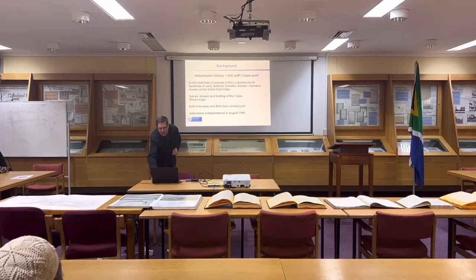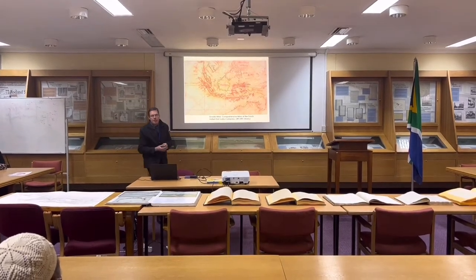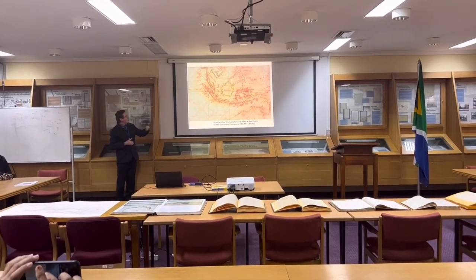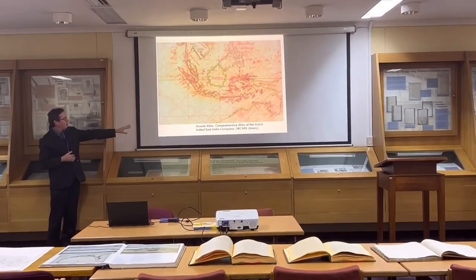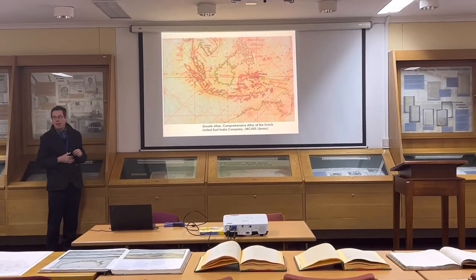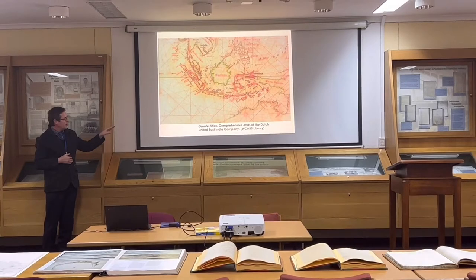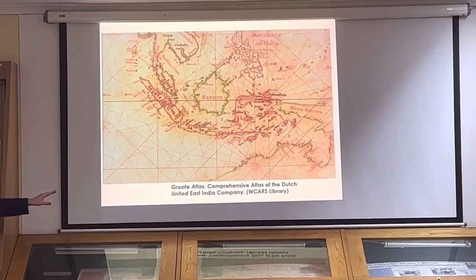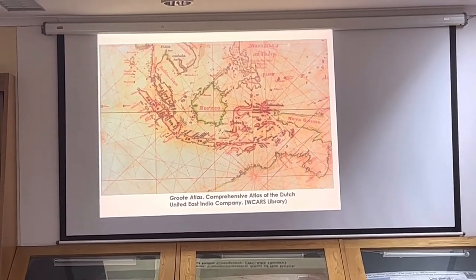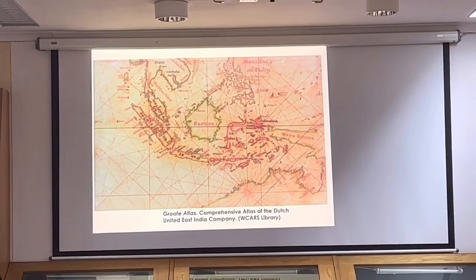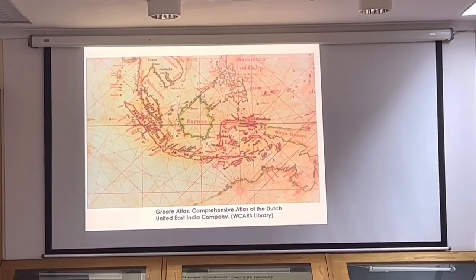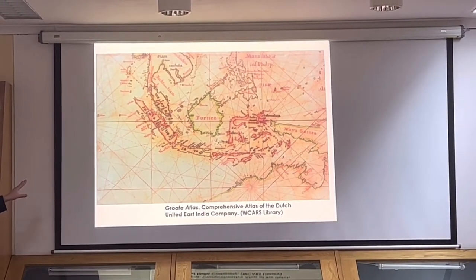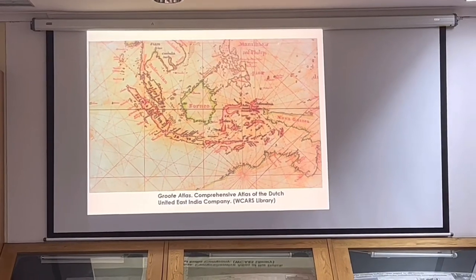Here you can see an older historical cartographic map from 1745, which comes from the Grote Atlas — the Comprehensive Atlas of the Dutch United East India Company — held at the Western Cape Archives Library. And that book in the center is the Huerta Atlas, which shows the geographical map of Sumatra, Borneo, and Java.